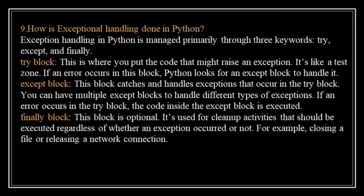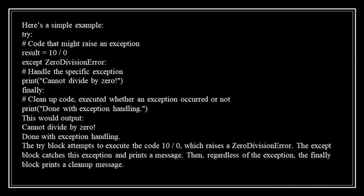How is exception handling done in Python? Exception handling in Python is managed primarily through three keywords: try, except, and finally. The try block is where you put the code that might raise an exception — it's like a test zone. If an error occurs in this block, Python looks for an except block to handle it. The except block catches and handles exceptions that occur in the try block. The finally block is optional and is used for cleanup activities that should execute regardless of whether an exception occurred, for example, closing a file or releasing a network connection. In the example, the try block attempts to execute 10 divided by 0, which raises a ZeroDivisionError. The except block catches this exception and prints a message. Then, regardless of the exception, the finally block prints a cleanup message.